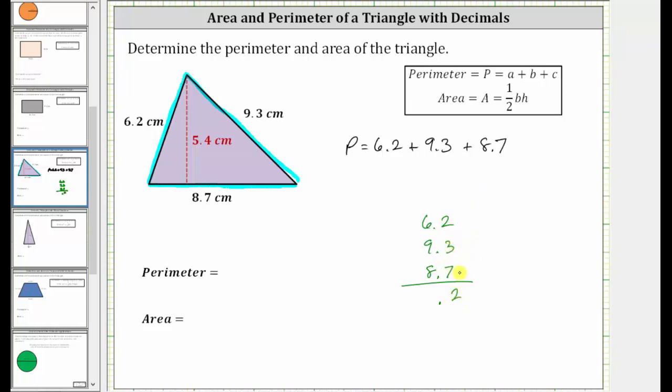We record the two, perform an exchange with the one. And now adding the ones place value, one plus six is seven, plus nine is 16, plus eight is 24. We now know the perimeter is equal to 24.2 centimeters.